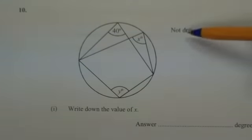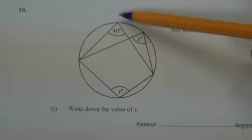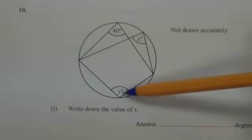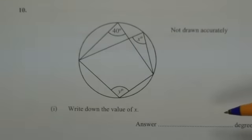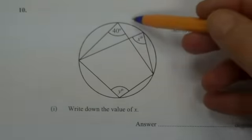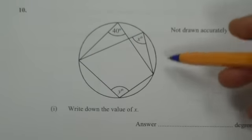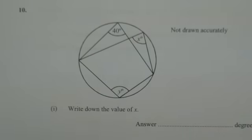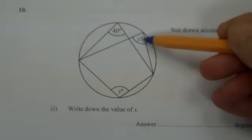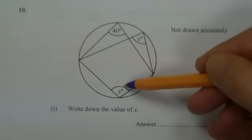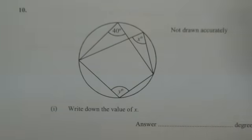And whenever it says Not Drawn Accurately or Not to Scale, that means that you can't go ahead and use a protractor to measure these angles, because you're not going to get the marks for that. Now this is a circle, and there are some lines drawn inside the circle, and so that's telling me that I need to use circle theorems to find the values of the missing angles. It's important that you learn all of your circle theorems before you go into the exam.